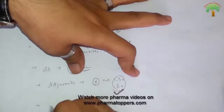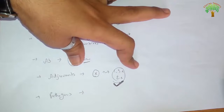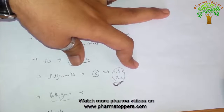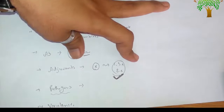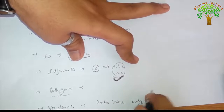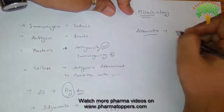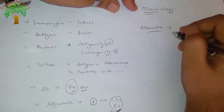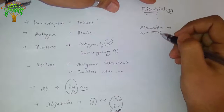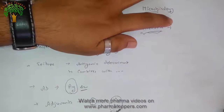Next is pathogens. Pathogens are microorganisms which have the ability to cause disease. Next is virulence — virulence is the capacity of the microorganism to invade the body. Attenuation is the process which reduces the virulence of the pathogen.